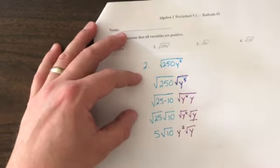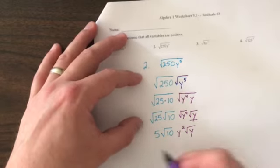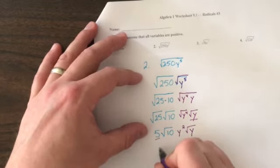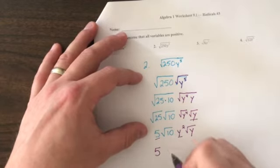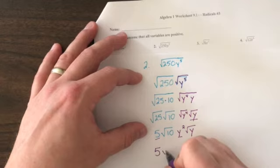Now I'm not quite done. I need to reorder my terms. The coefficient comes first, which is 5, and then the variable parts not including a radical symbol. So I'll write 5y squared.